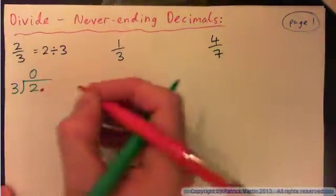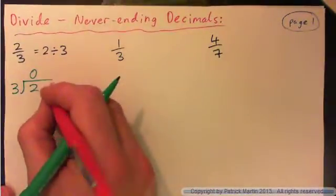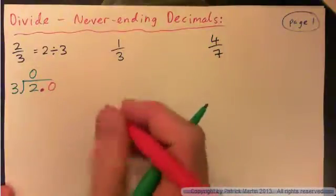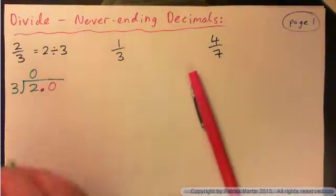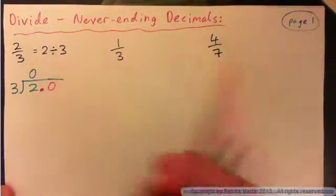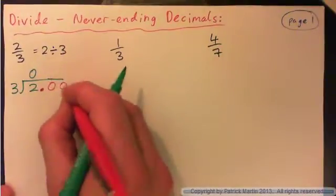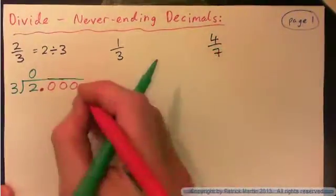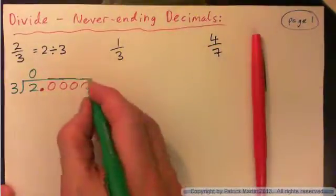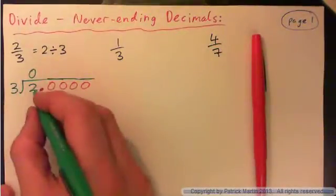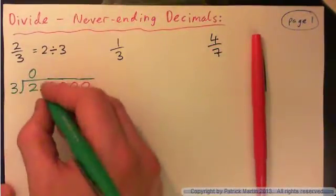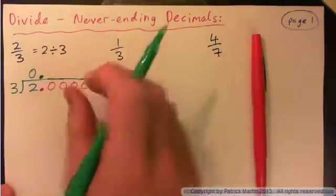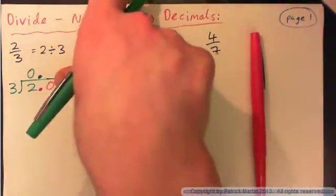We could put a point here and add a zero. Could we add another zero? Let's add a bunch of zeros and see what we get. So 3 into 2 goes 0 times and the decimal point in the answer goes up here. Now we've got 3 into 20.